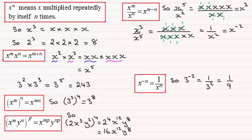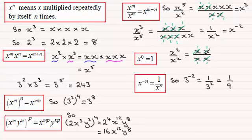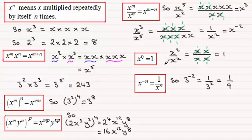We can use this rule to demonstrate another important point: anything to the power 0 is 1. This is easily shown: x squared divided by x squared is x times x divided by x times x. By cancelling, we've got the same thing on top as on the bottom, giving 1 divided by 1 which is 1. And subtracting the powers gives x to the power 0. So whenever you get x to the power 0, it's always 1.